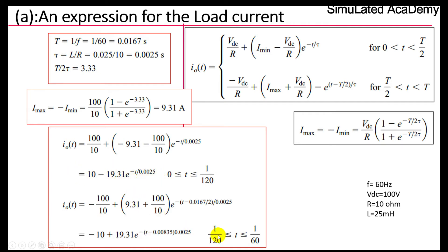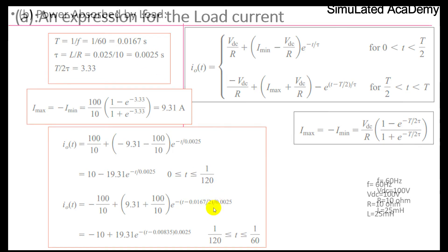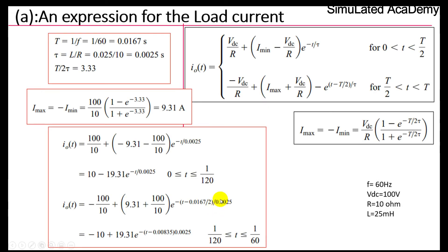Similarly, for the second time interval T/2 to T (i.e., 1/120 to 1/60 s): i(t) = −VDC/R + (I_max + VDC/R) · e^(−(t − T/2)/τ) = −10 + (9.31 + 10) · e^(−(t − 0.00835)/0.0025) = −10 + 19.31 · e^(−(t − 0.00835)/0.0025) amperes.